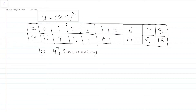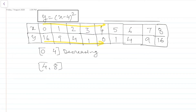As x increases from 0 to 4, y decreases from 16 to 0. Now in the closed interval 4 to 8: when x is 4, y is 0; when x is 5, y is 1; when x is 6, y is 4; when x is 7, y is 9; when x is 8, y is 16. Here as x increases, y also increases from 0 to 16. So in the second interval, 4 to 8, the function is increasing.